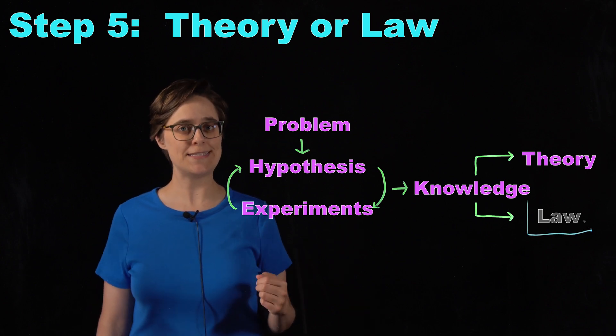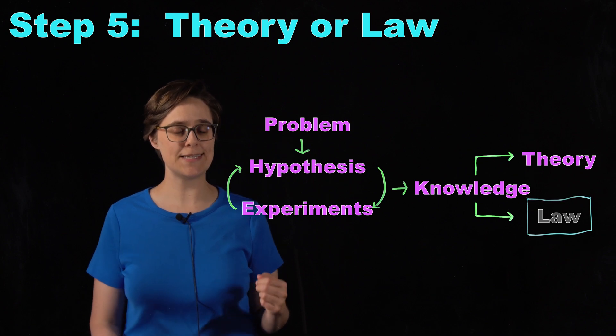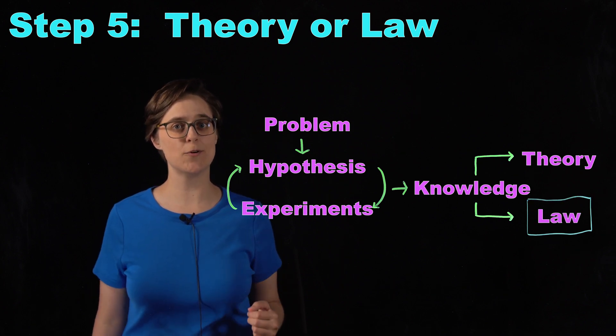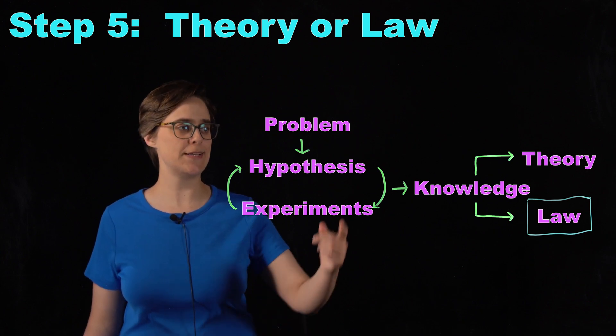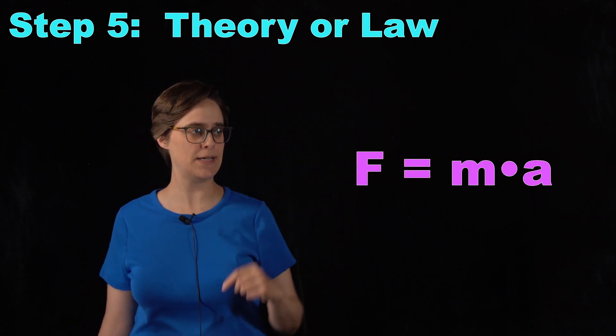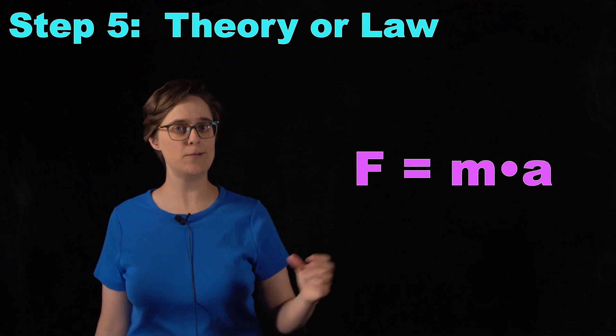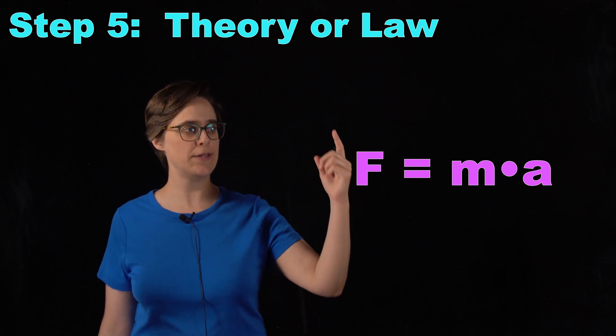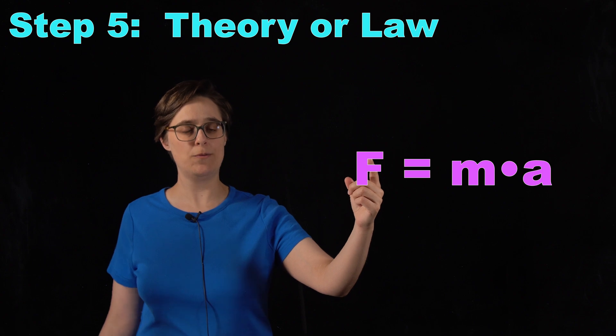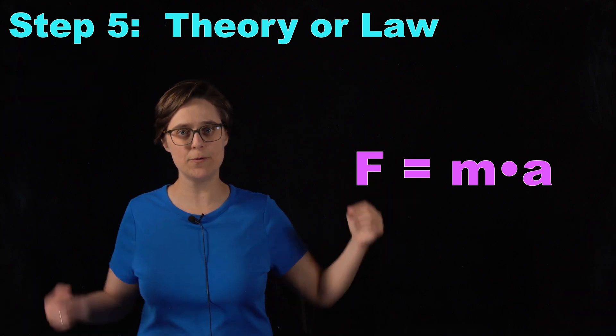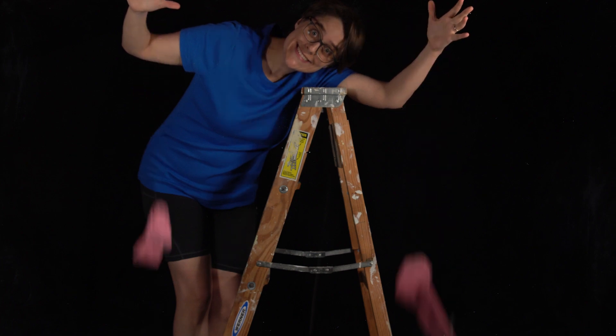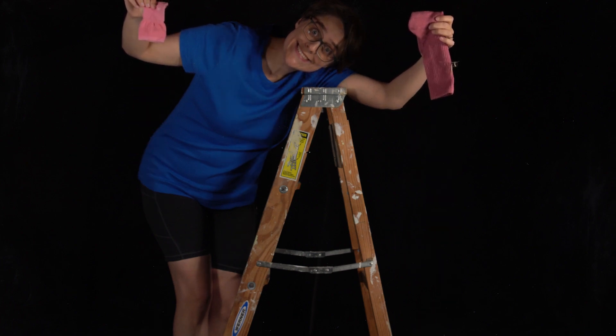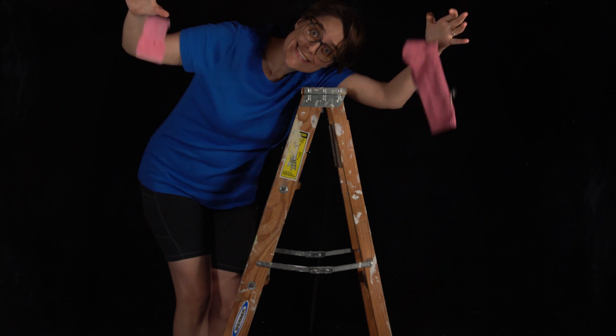If experiments give consistent results that can concisely be summarized, that's called a law. An example would be Newton's second law of motion. I can write it as force equals mass times acceleration. I can use this equation to calculate the force with which socks of various masses hit the floor when I drop them, based on acceleration due to Earth's gravity. If these socks are dropped from the same height, the sock with more mass hits the floor with greater force.